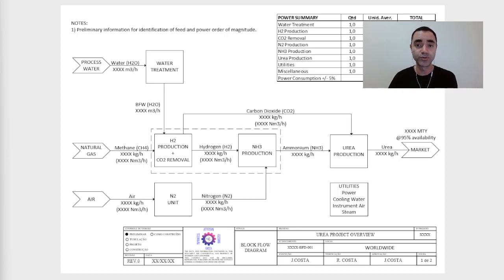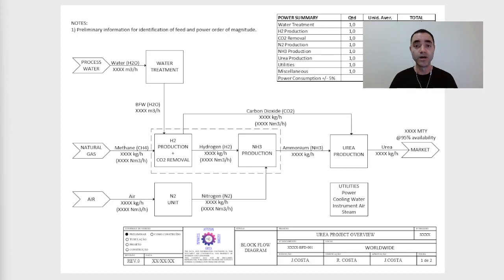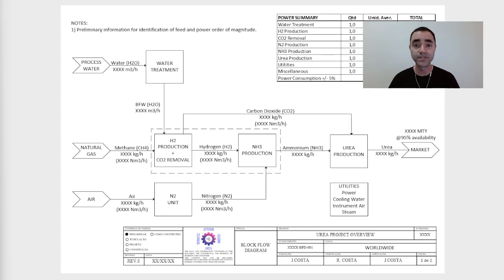The first thing that I did was, based on the required production he expects to have in the country: what are the units, what are the raw materials, and what is the power needed for him to install and operate the plant. One of the documents you will develop as a chemical process engineer working with plant design is the block flow diagram. The block flow diagram is a simplification of your raw material balance, your process flow diagram, and all units needed for the installation of a plant.